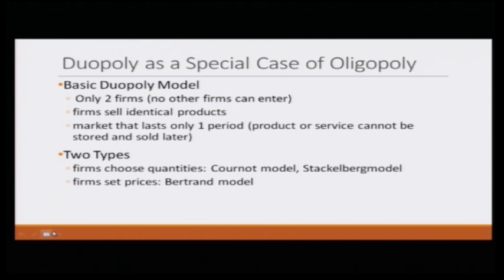There are two types of duopoly market. In one, firms choose quantities to compete against each other — that is the Cournot model, which you have already studied. In the other, firms set prices to compete against each other — that is the Bertrand model. In the Bertrand model, firms are deciding prices as their strategy when competing against each other.